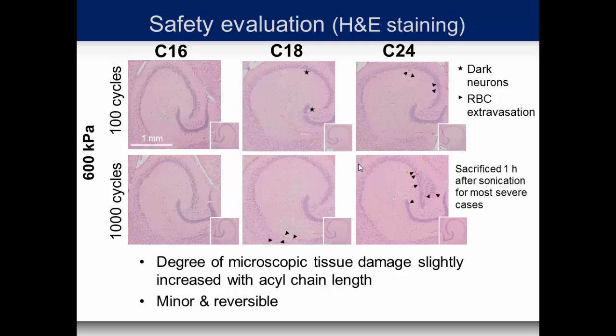For safety evaluation by H&E histology, we saw no damage with C16 — this was the safest shell by all accounts. With C18 we had a couple of erythrocyte extravasations in a few mice for both 100 and 1000 cycles. C24 similarly showed damage, with the most occurring at 600 kilopascals. We started with 600 kilopascals because this is where we expect the most damage. This is after one hour, and it is very minimal damage; we have seen this can be reversible after seven days, so this is the most drastic damage you would expect.